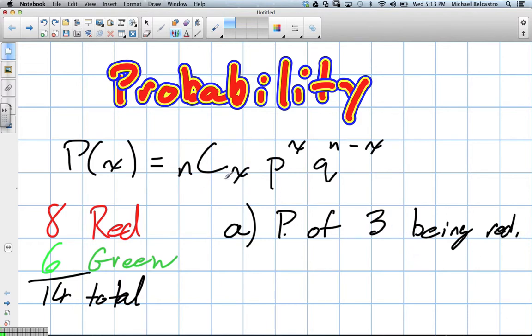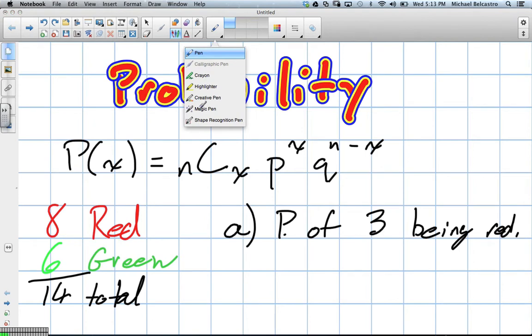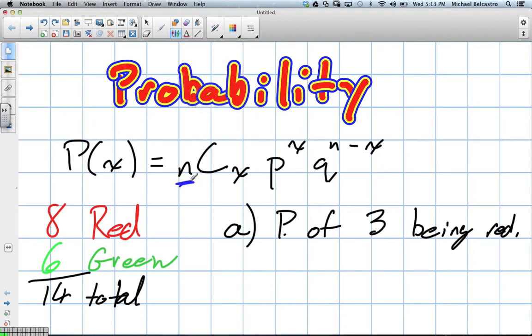So what we're looking at here is we have our formula, and I believe it's Bernoulli's theorem. N is the total number of trials, X stands for our number of successes, P is the probability of success, Q is the probability of failure, and then it's to the exponent of our total minus our successes, which is essentially our failures in this question.